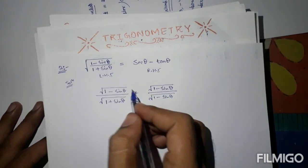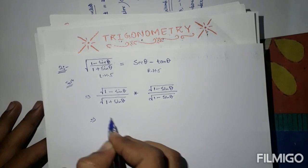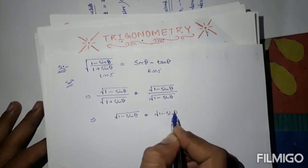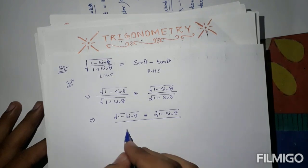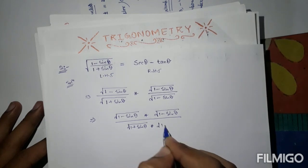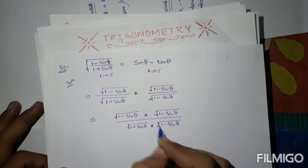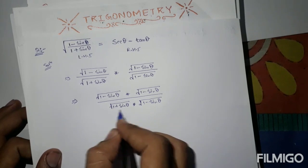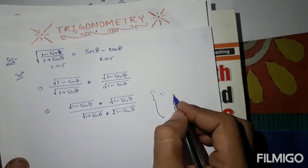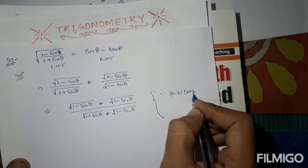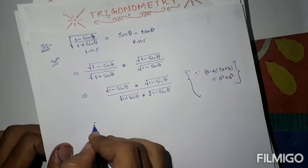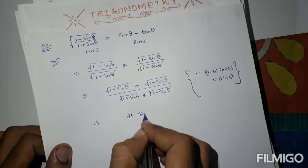So we get square root of (1 minus sine theta) times (1 minus sine theta) divided by (1 plus sine theta) times (1 minus sine theta). In this expression we recognize the form (a + b)(a - b), which equals a² minus b². So the denominator becomes 1 minus sin²theta.